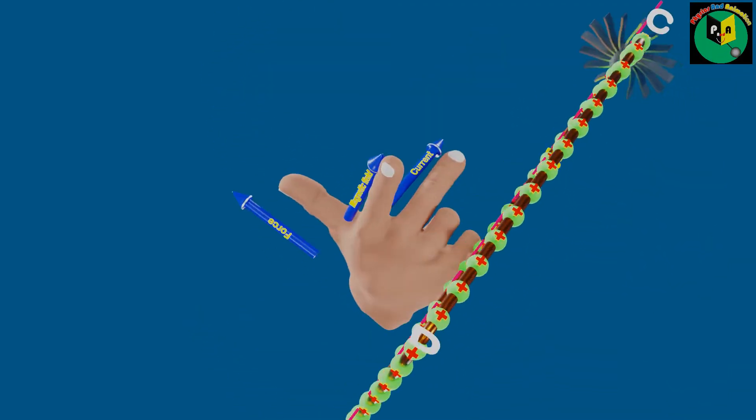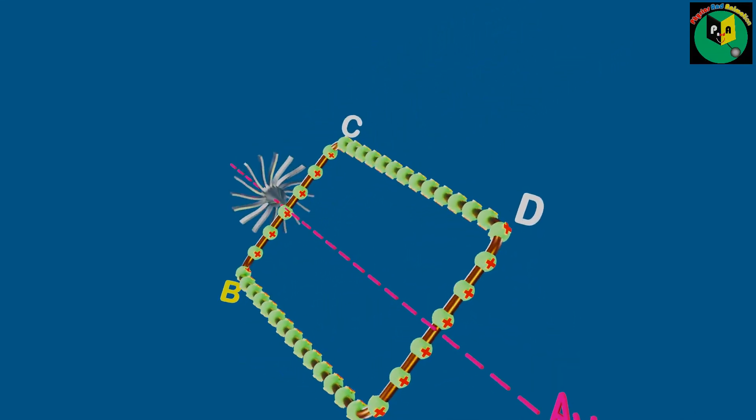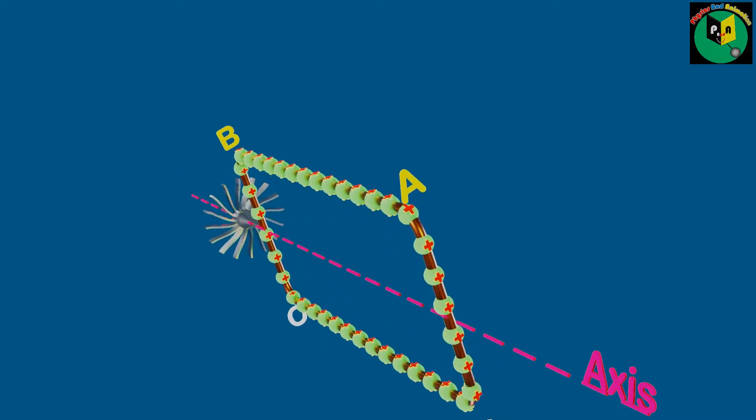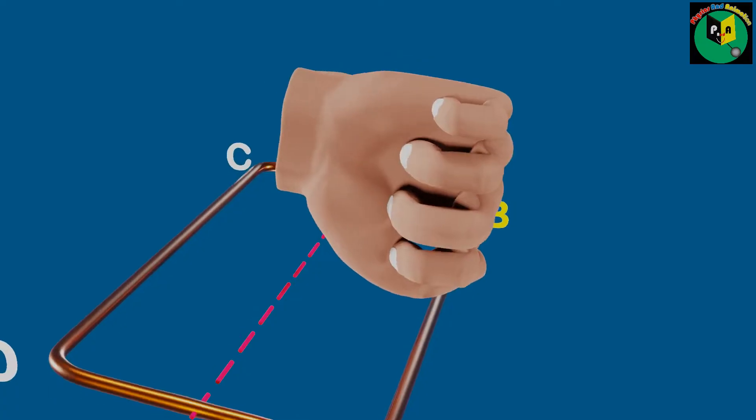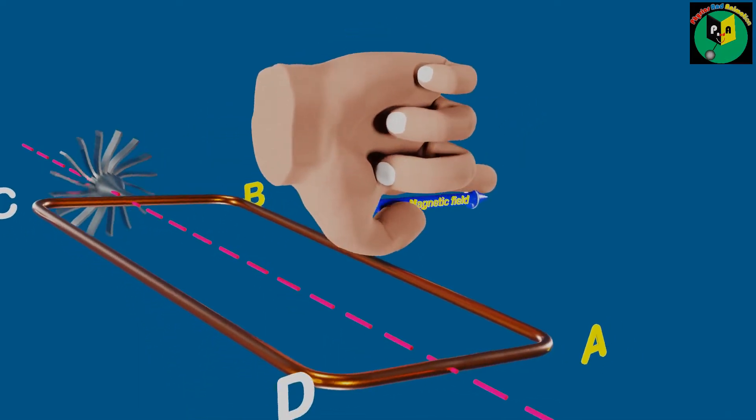Now the same arm AB of the coil rotates and moves downward from the other side. Let's again find the direction of induced current with the help of the right-hand Fleming's rule. In which the forefinger points in the direction of the magnetic field, the thumb opens in the direction of force acting on the coil, which is downward this time.